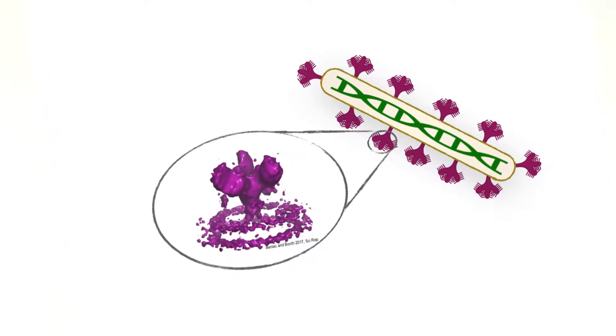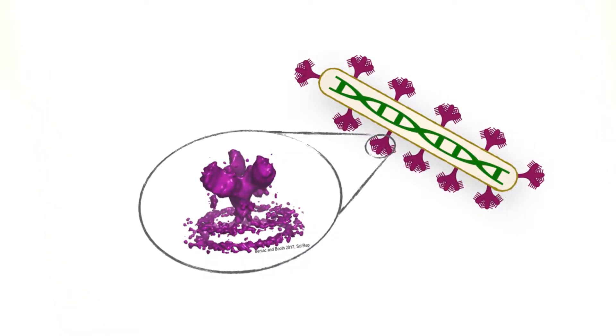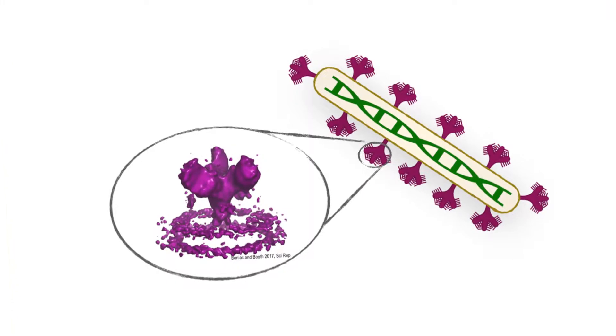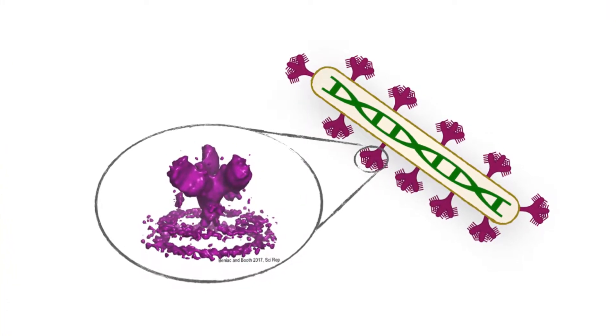The surface of Ebola virus is covered in just one type of protein called the viral glycoprotein, and it turns out that this glycoprotein is actually what causes a lot of the harm in your body. In Ebola virus infection, up to 90% of people who become infected will actually die from infection.